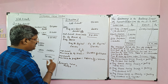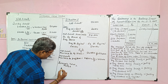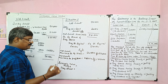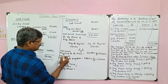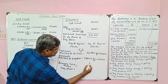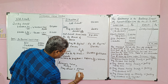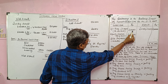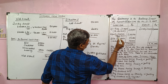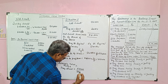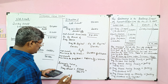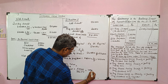Now find the share value under intrinsic value method. First, for preference shares: net assets available for preference shares 2,16,400 divided by number of preference shares. Preference share capital is 2,00,000, each share value is 100, so number of preference shares = 2,00,000 divided by 100 = 2,000. Therefore 2,16,400 divided by 2,000 = rupees 108.2 per share.